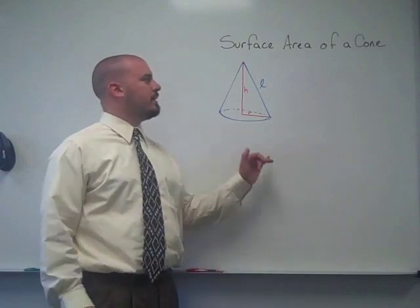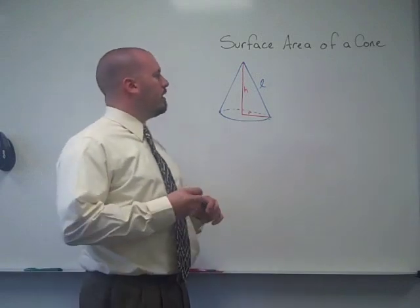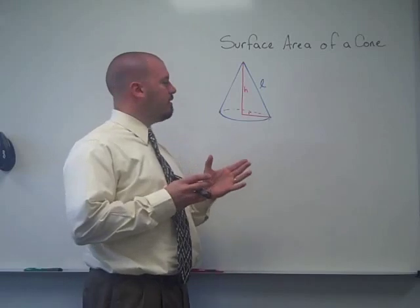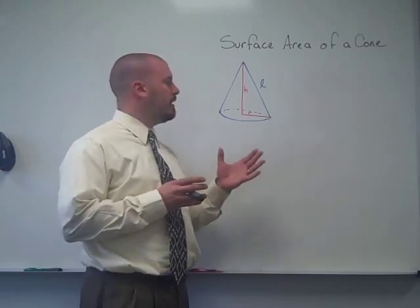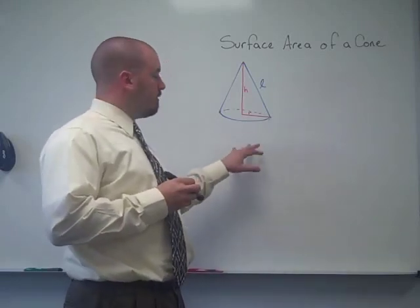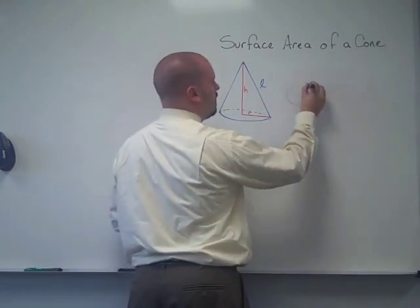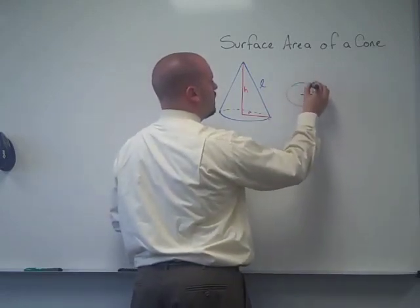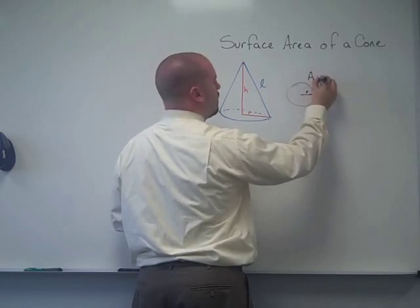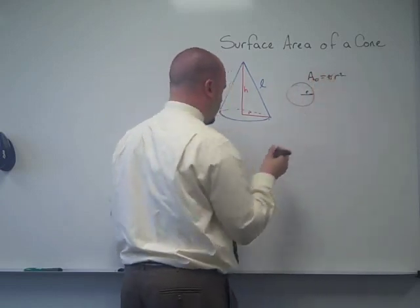In this video, we're going to be looking at how to find the surface area of a cone. To find the surface area of any figure, you just need to find the area of each of its individual surfaces and add them together. One of the surfaces of a cone is just a circle, so for the area of the circle, we would use pi times r squared.